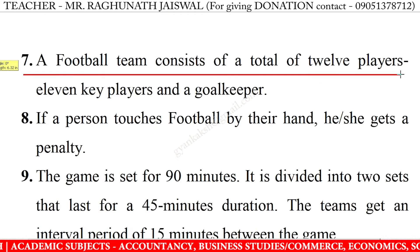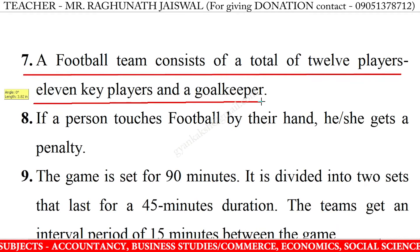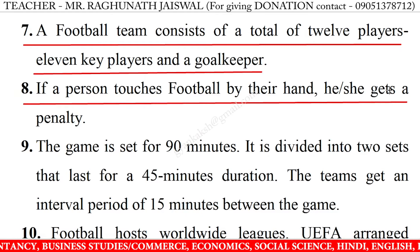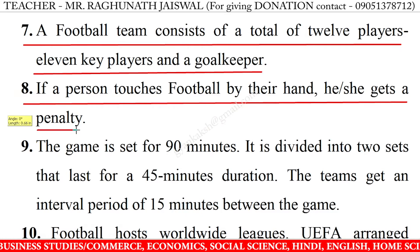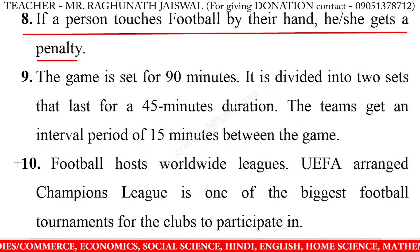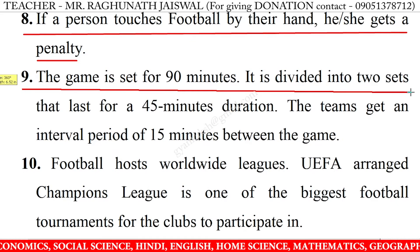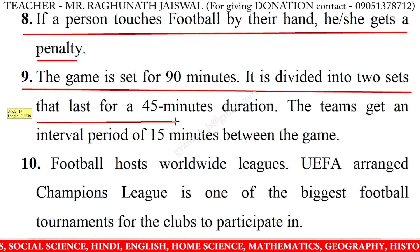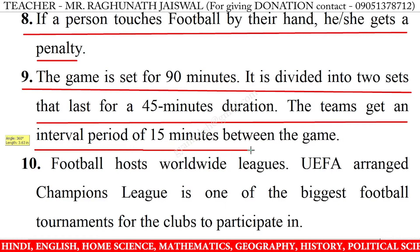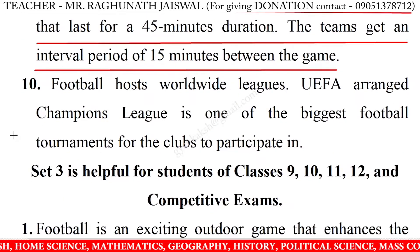7. A football team consists of a total of 12 players — 11 key players and a goalkeeper. 8. If a person touches the football with their hand, he or she gets a penalty. 9. The game is set for 90 minutes, divided into two sets of 45 minutes each, with an interval of 15 minutes between the halves.